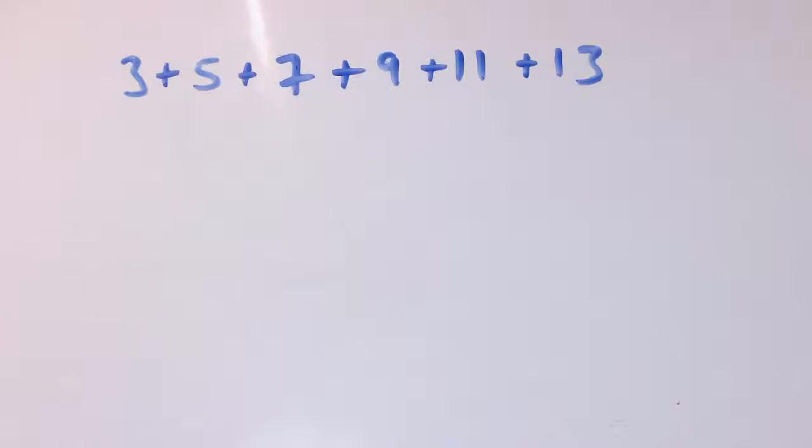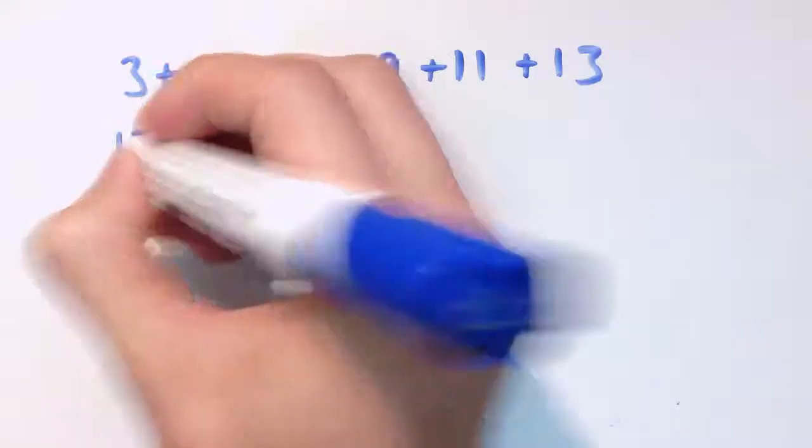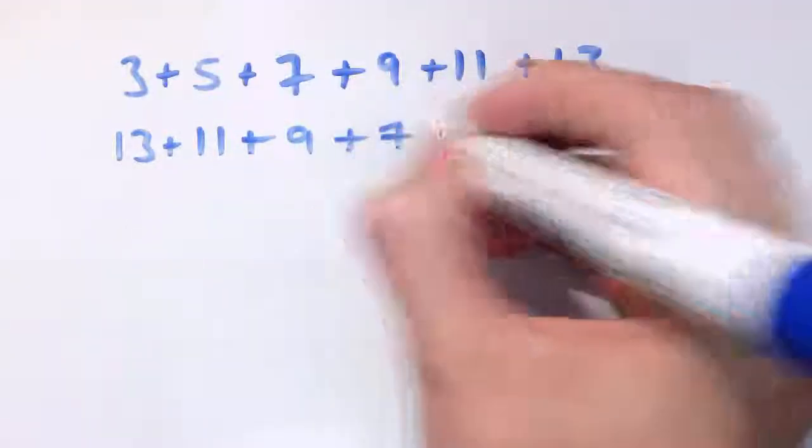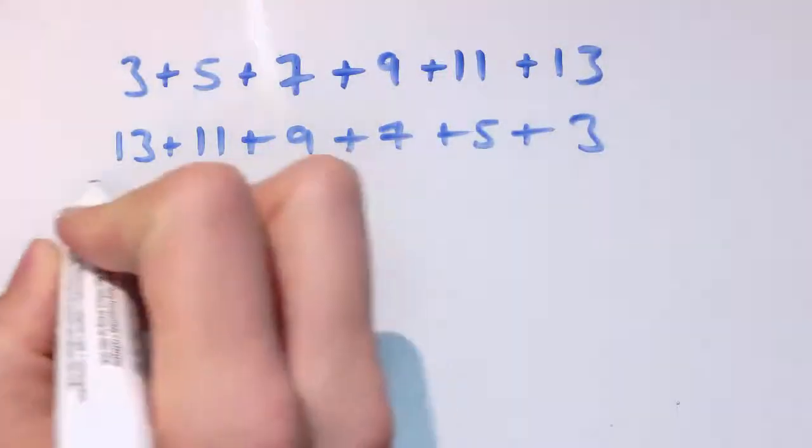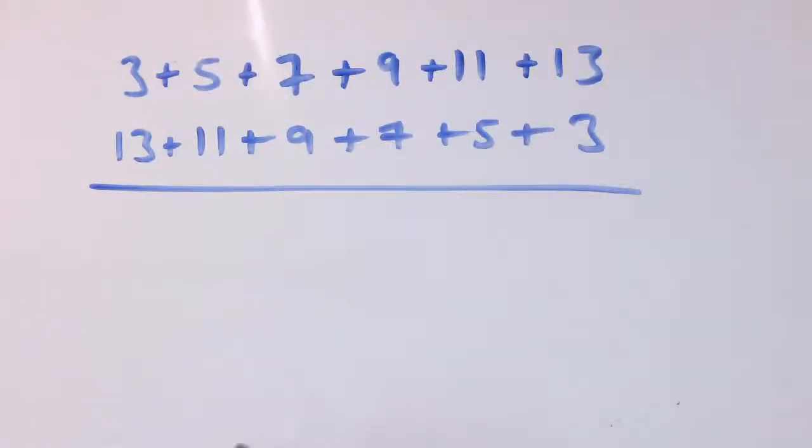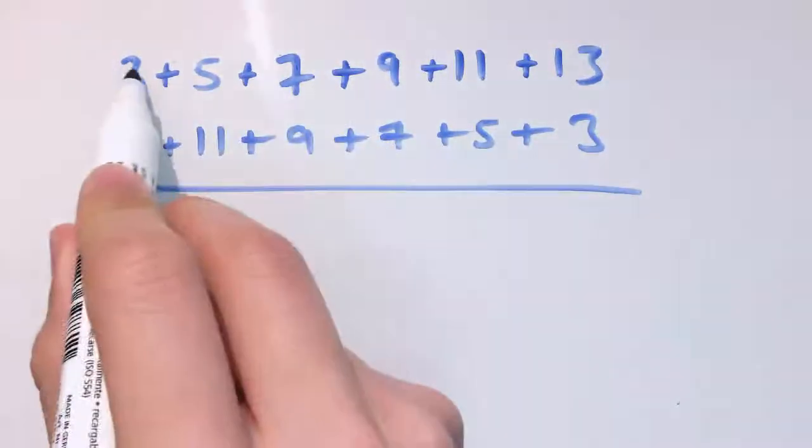There's a really neat way to do this and this will motivate a formula that we'll be able to use to sum up the arithmetic progression. What I'm going to do is just see what happens when I write this down backwards. So I'm going to have 13 plus 11 plus 9 plus 7 plus 5 plus 3 and I'm going to add all of these numbers together. So what I'm going to end up with is double what we've got in one sequence. But it's nice because if we have a look at this.